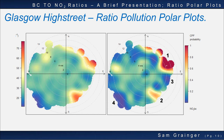Looking now at ratio pollution polar plots, with ratios on the left and CPF plots on the right. There were four main features of note on these charts. Hotspot 1: northerly winds, especially from the northeast, have brought high ratios of nitrogen to BC with probability approaching 100%, with ratios of around 70 to 1 NO2 to BC. Hotspot 2 had a more moderate source of NO2 with a 70% probability, coming from south-southeasterly winds at high wind speeds above 4 metres per second, with ratios of around 50 to 1 NO2 to BC.